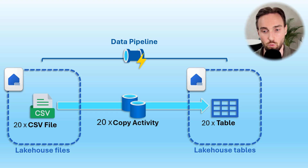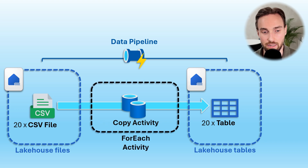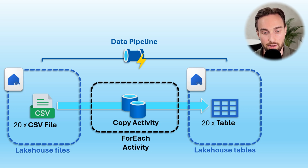This is the stage where the ForEach activity steps into the picture. We can simply wrap the copy data activity inside a ForEach activity and then iterate over it 20 times, thus reducing the number of activities from 20 down to just two.